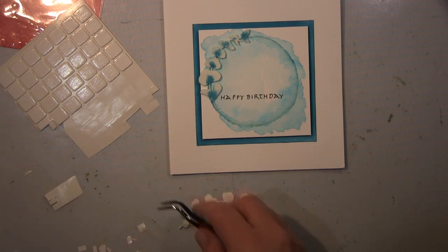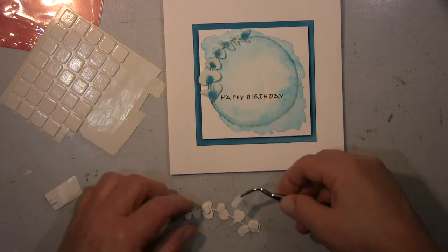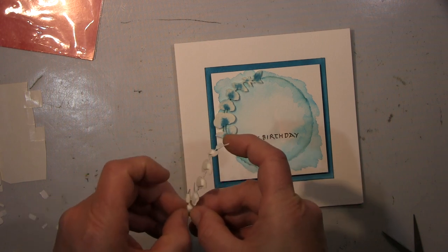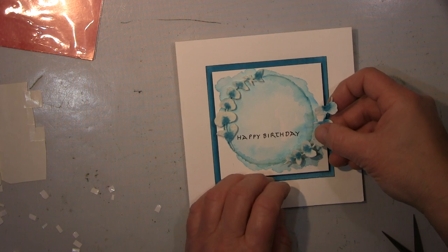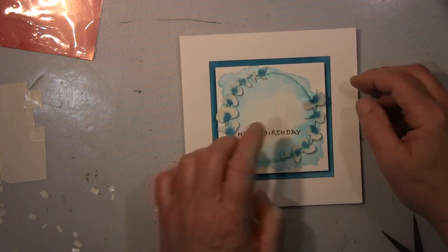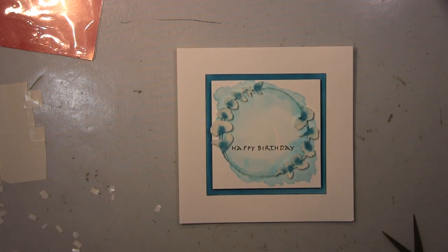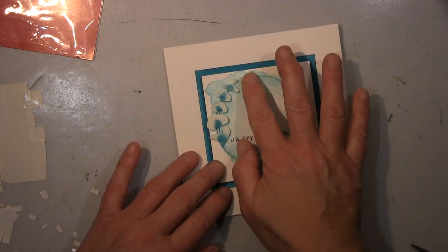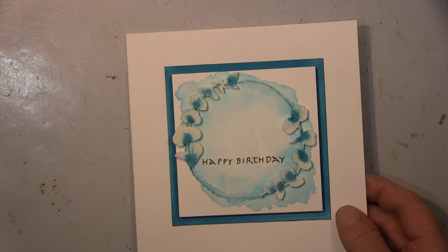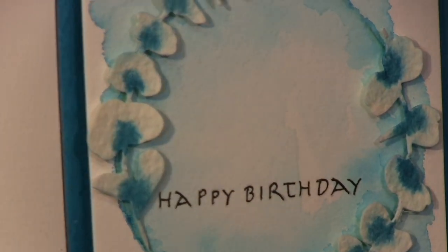Ihr Lieben das ist jetzt schon das letzte bisschen, wie gesagt ein Geduldspiel hier mit diesen kleinen fiddling Dingern aber es funktioniert. Ich habe euch jetzt nicht alles gezeigt. Geduld ist jetzt nicht so meine Stärke, nicht sehr ausgeprägt, deswegen arbeite ich nicht so gerne so fiddlig. Und das war's dann schon, fertig, ganz einfach, ganz schnell zu machen aber eigentlich wunderschön. So das ist schon das close-up.